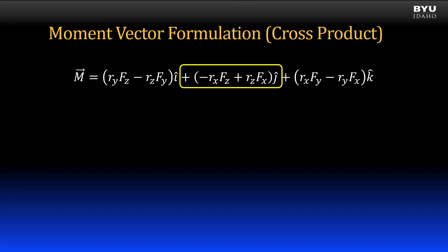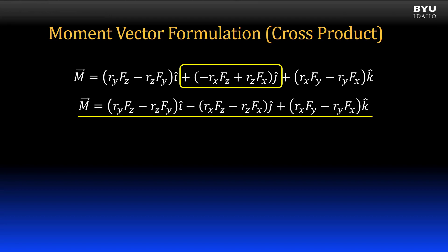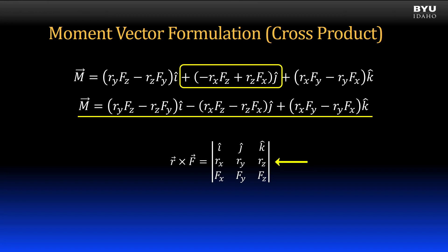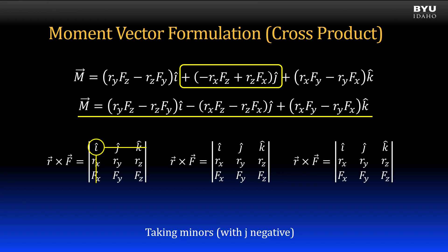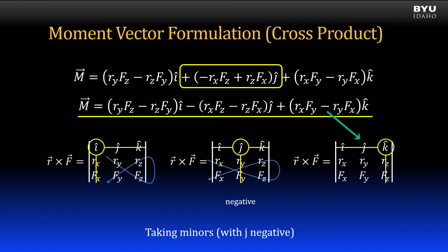If we take the equation we just formed and switch the signs for the middle j term, we get our standard cross product operation equation written out in vector notation. Many calculators have built-in cross product operations, so you would not need to memorize this equation. However, if you do need to recreate it, here is a common technique: write out a matrix with i, j, and k as the top row; the x, y, and z components of the position vector as the second row; and the x, y, and z components of the force vector as the third row. Then you take the minors, with j being negative. The first minor is for the i component — cross out the first row and the first column, multiply the diagonal ry times fz, and subtract the diagonal rz times fy. Then do similar operations for the j and k components. Be sure to switch the sign on the value for j.